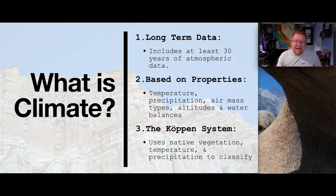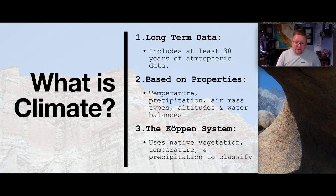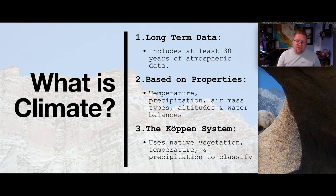We can even do it down to the day — what is the average March 21st high and low over the last 30 years? Climate is based on properties such as temperature, precipitation, air mass types, altitudes, latitude, and water balances. The Köppen Climate Classification System uses native vegetation, temperature, and precipitation to classify regions by a two or even three letter code, interpreted as an average climate.